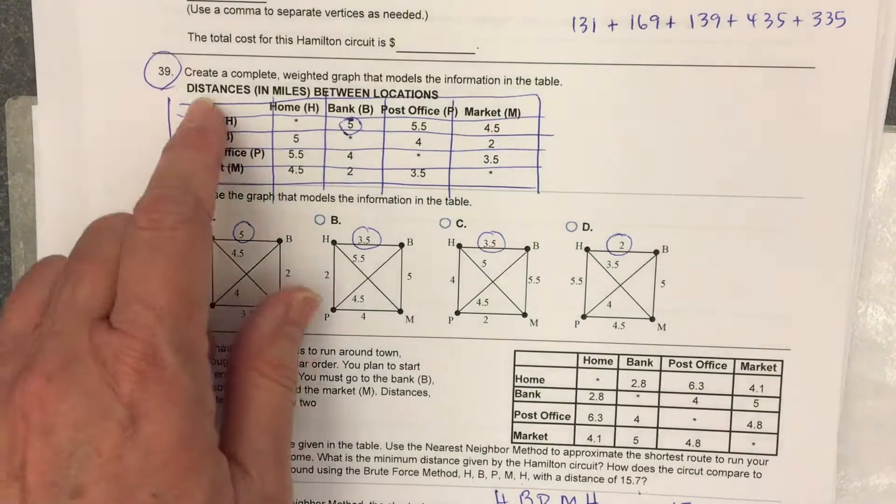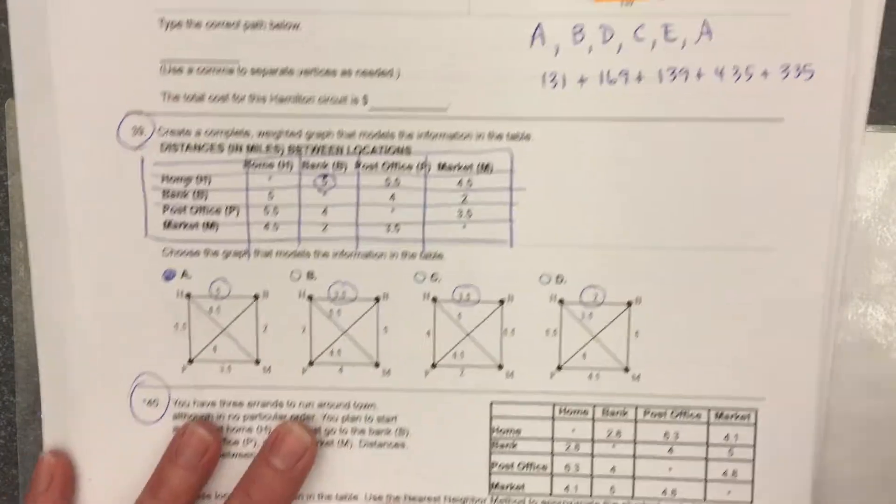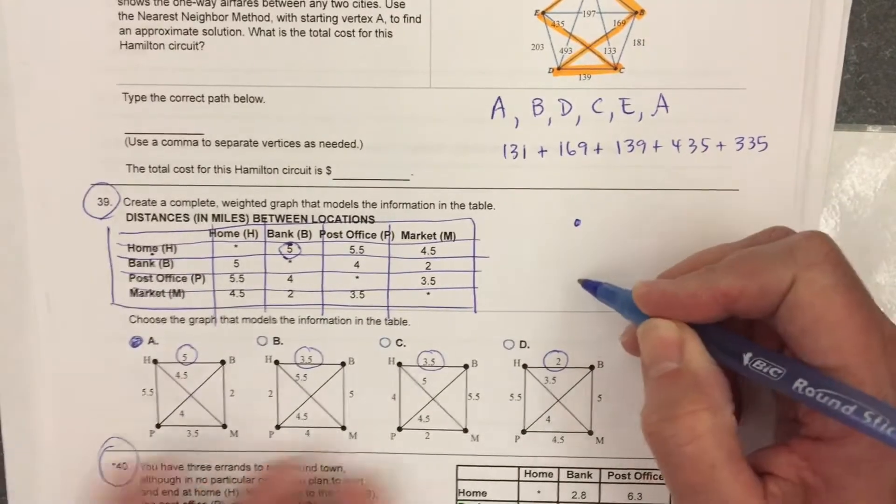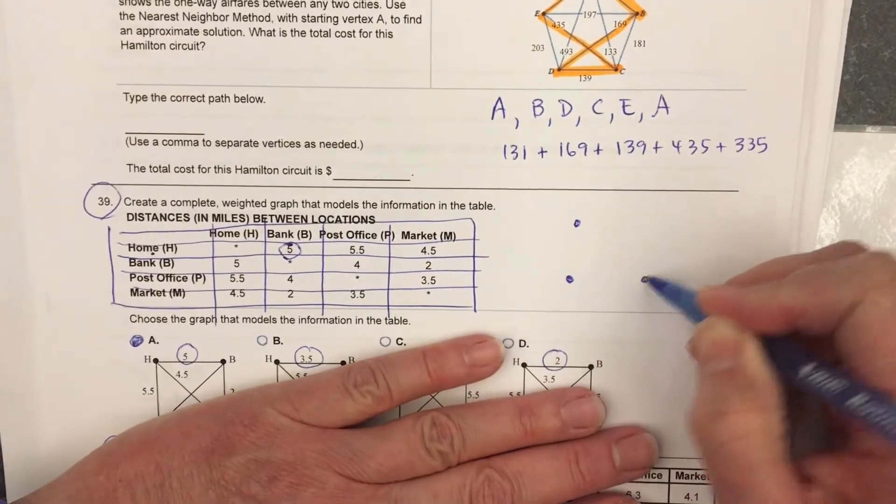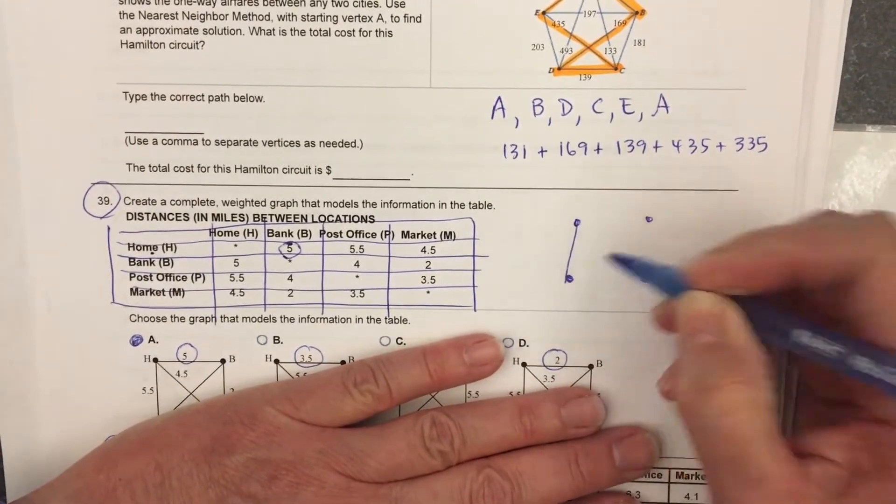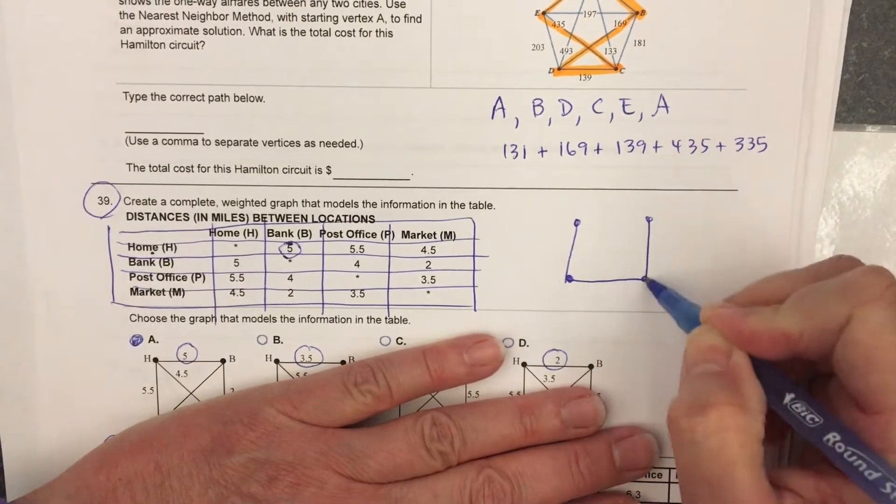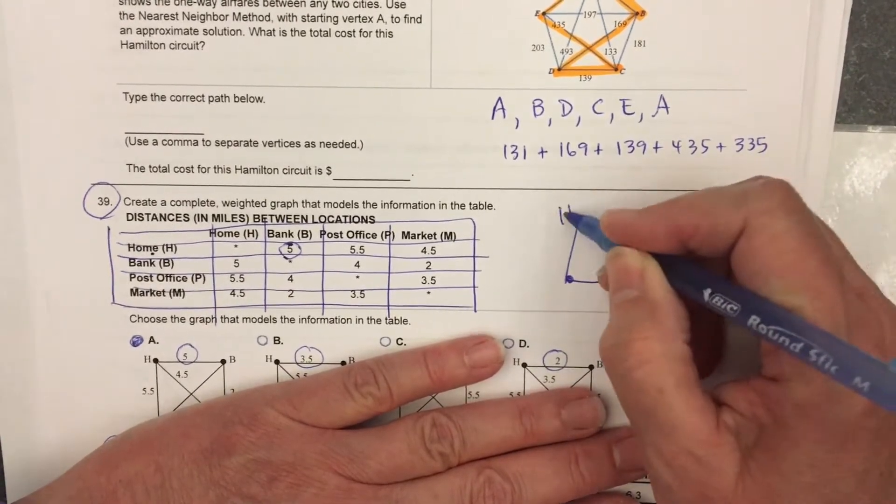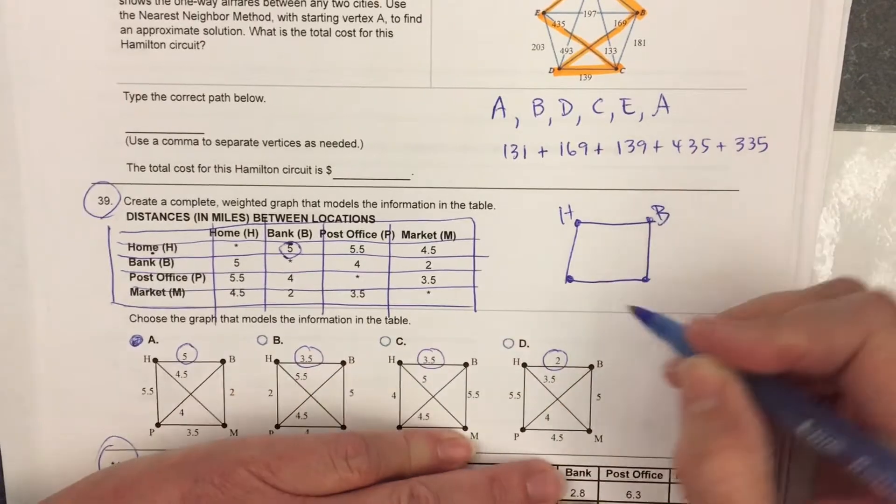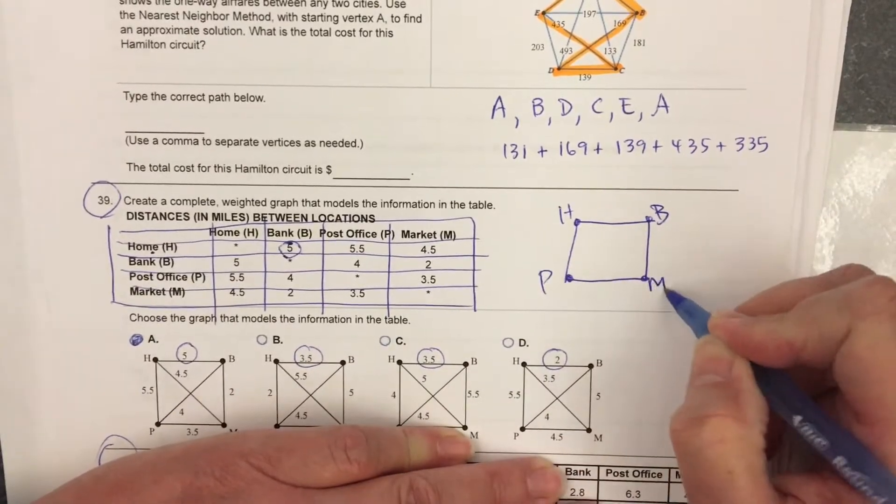as I look, I'm going to pretend I didn't even see these choices. I'll draw my own graph: Home, Bank, Post Office, Market.